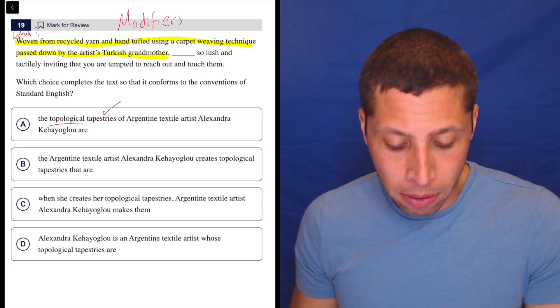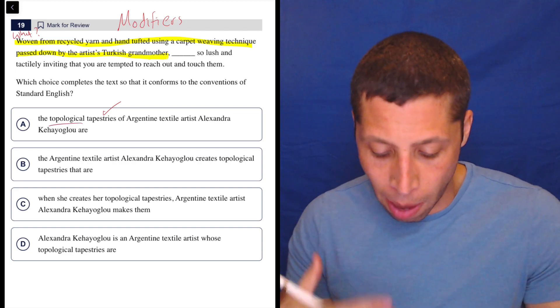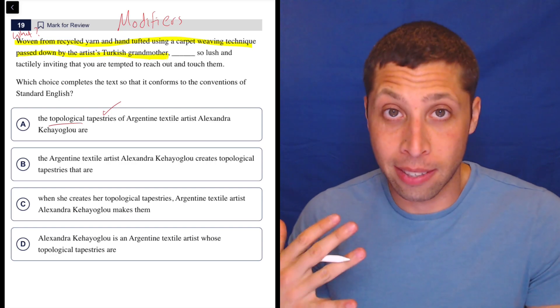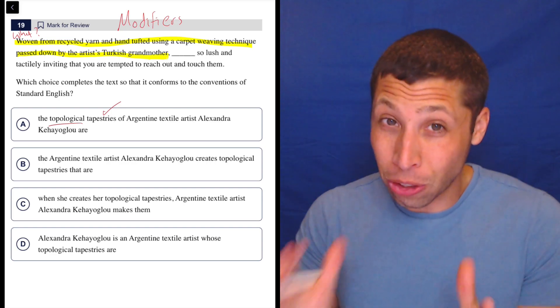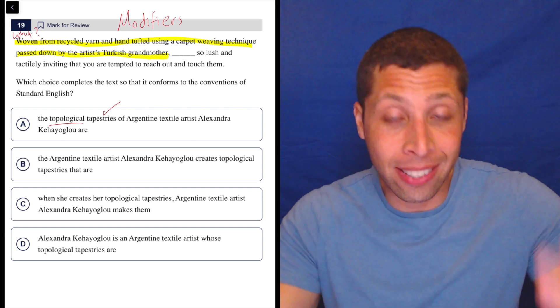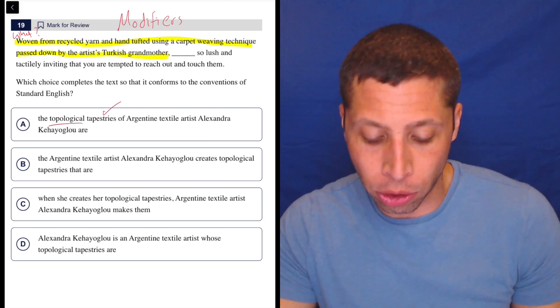Now there's some adjectives here, topological, I guess that's describing the tapestry, but it's still the tapestry is the first thing after that comma. That's what I need because that is the thing that was woven from recycled yarn.